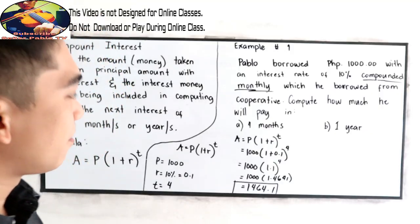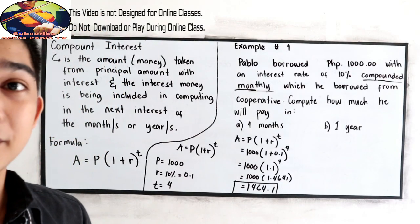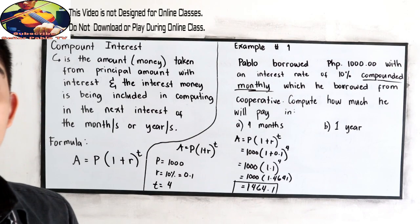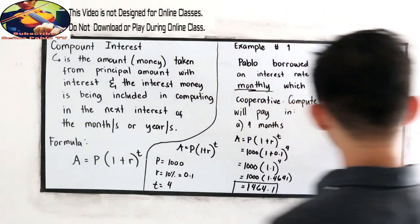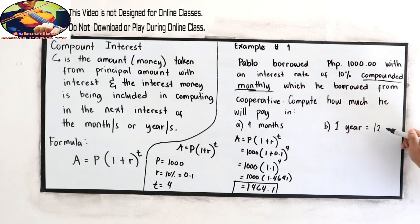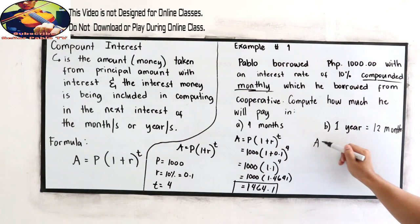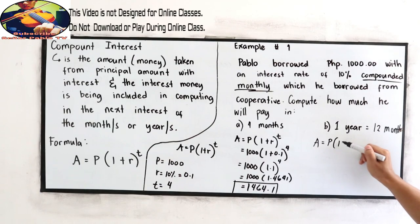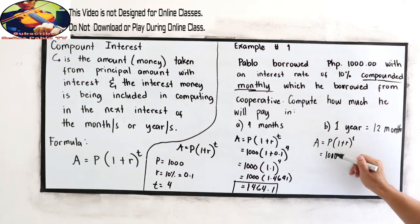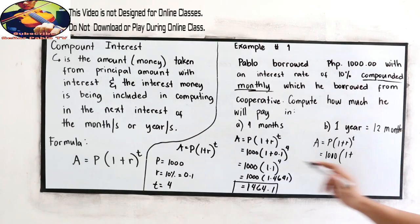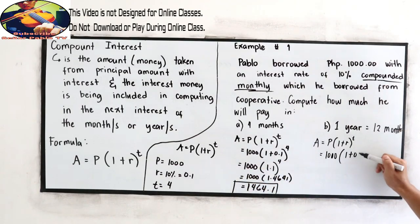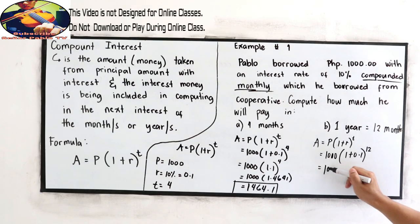Next, after 1 year, what will be the amount of money? So 1 year is equivalent to 12 months. Amount is equal to P times 1 plus R, raised to T. So 1,000 times 1 plus our rate, 0.1, our time, we have 12. So 1,000 times 1 plus 0.1, that is 1.1, raised to 12.